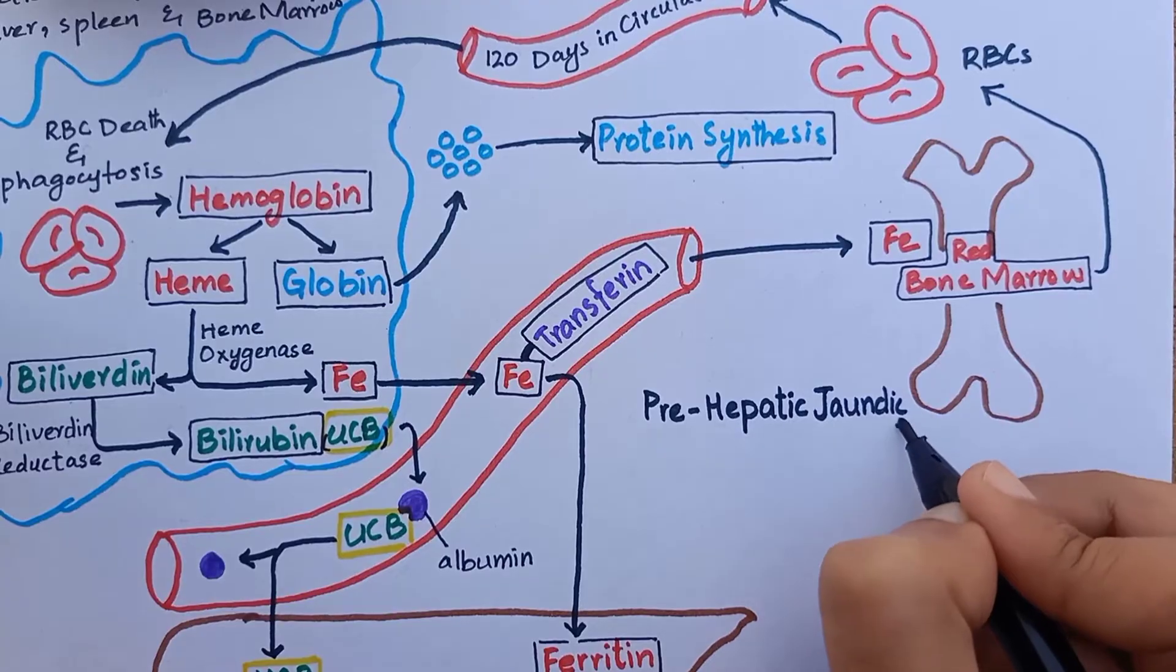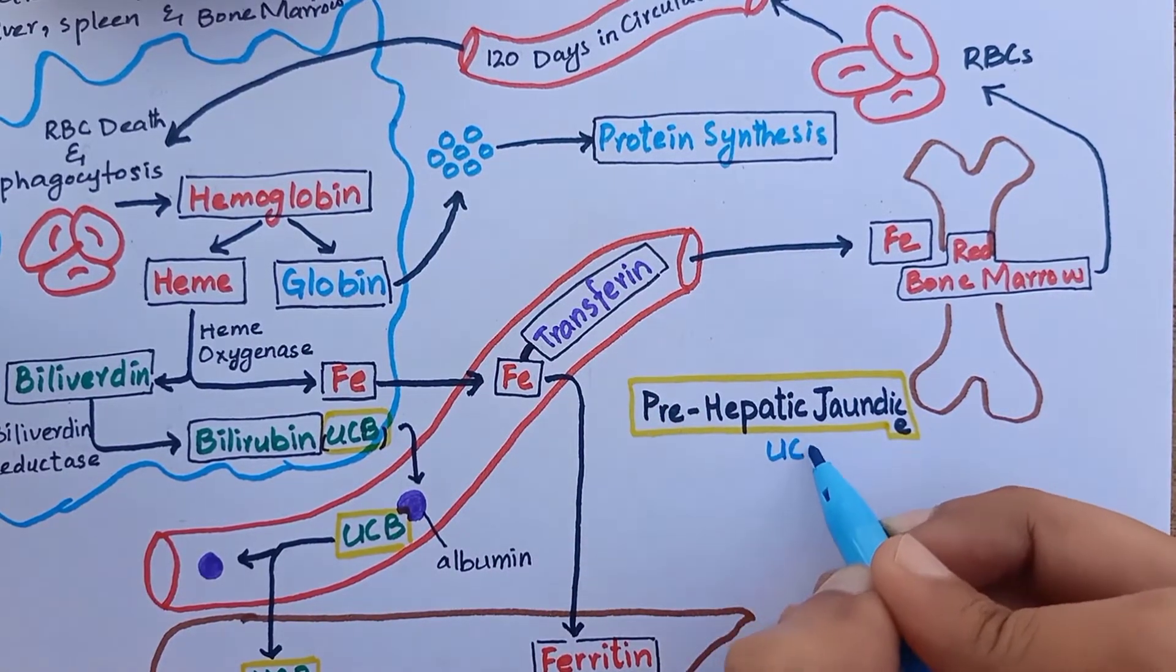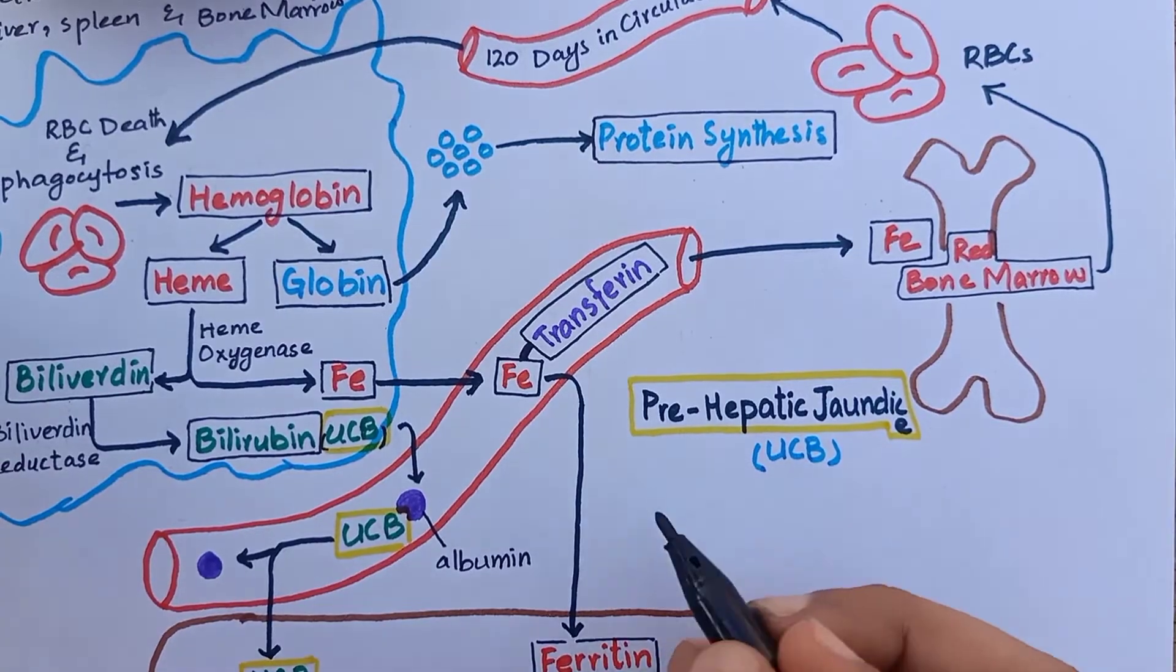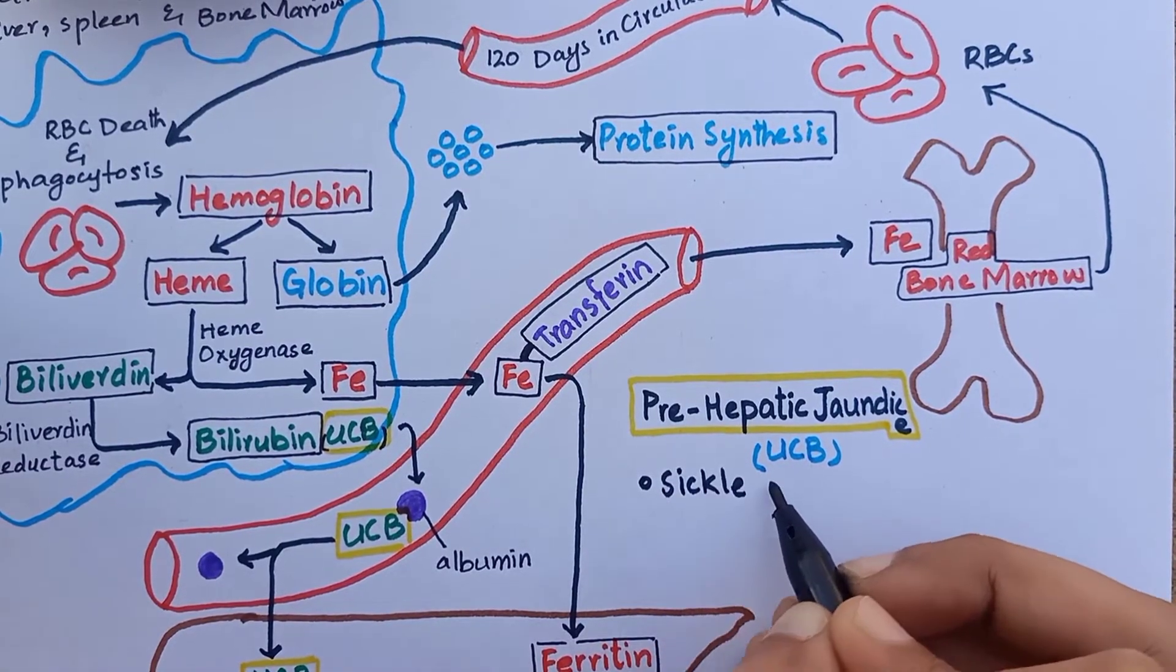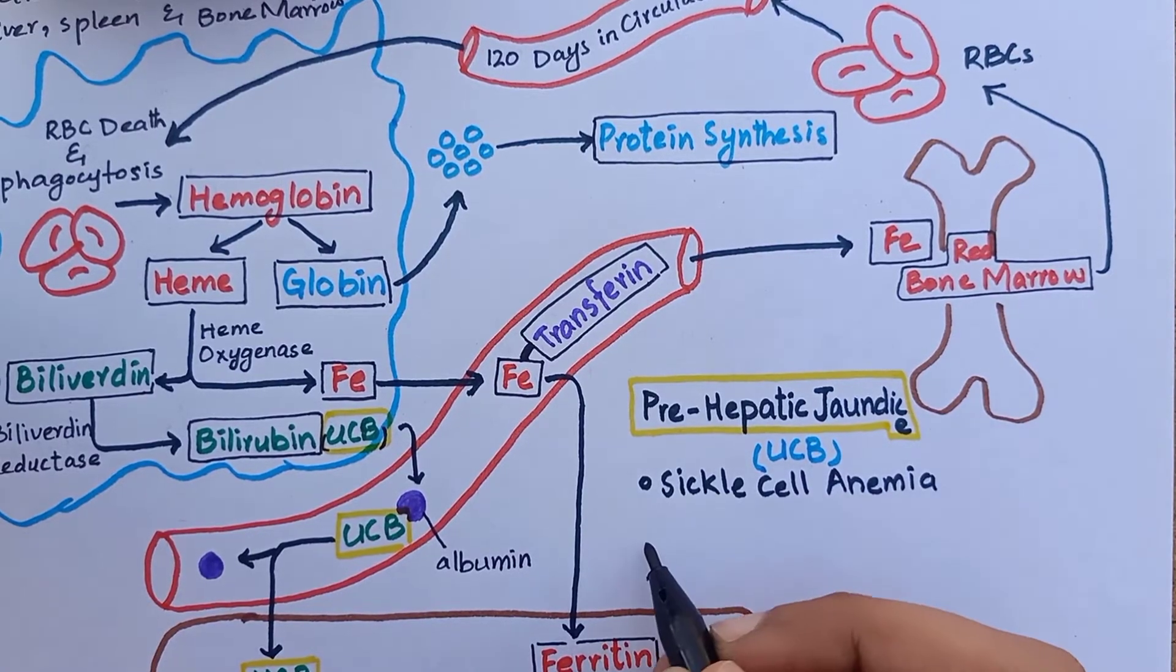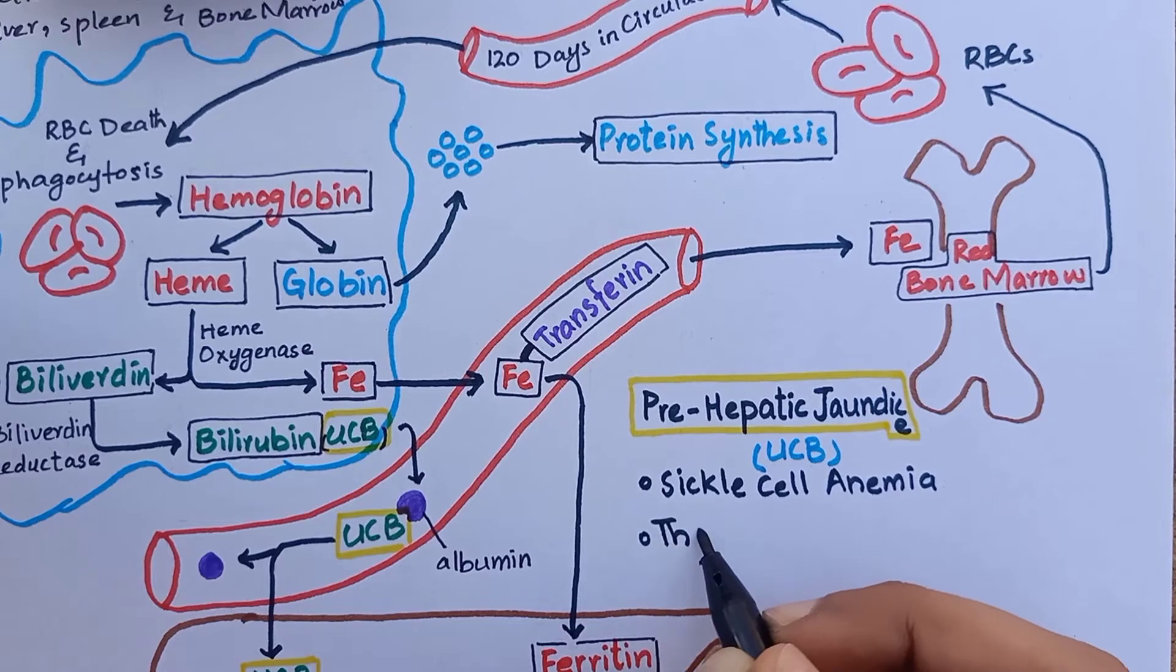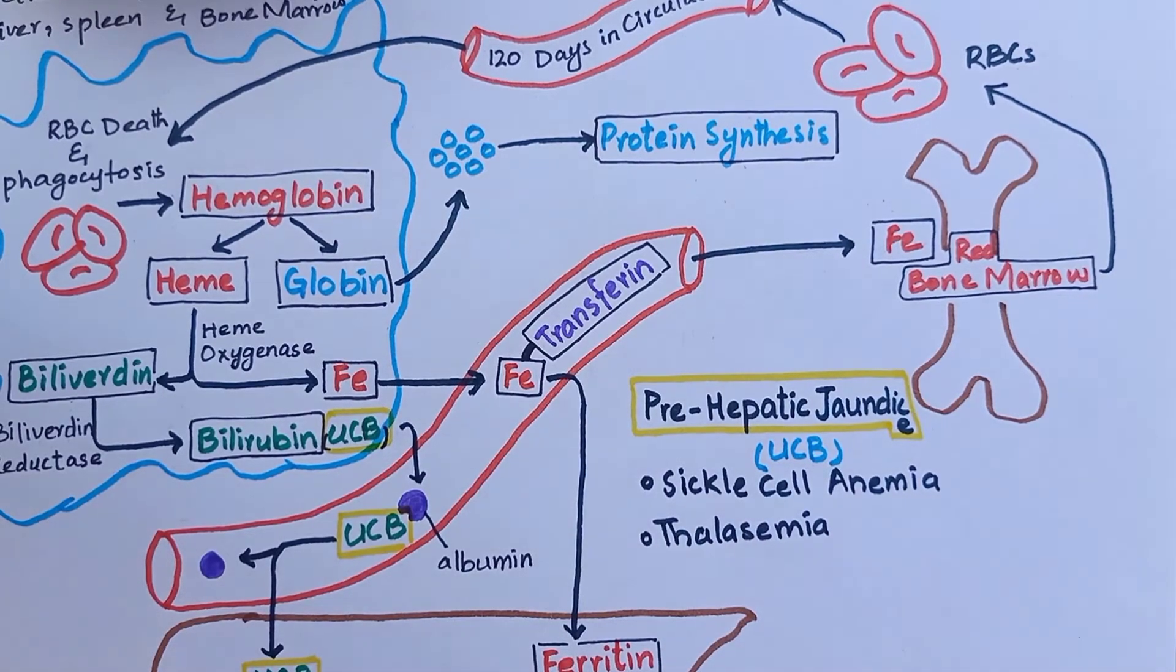First category is pre-hepatic jaundice in which there are high levels of unconjugated bilirubin only. Pre-hepatic jaundice can be caused by hemolytic anemias in which there is increased breakdown of red blood cells, for example sickle cell anemia and thalassemia. The unconjugated bilirubin is insoluble in water.